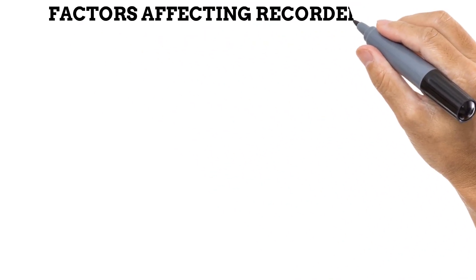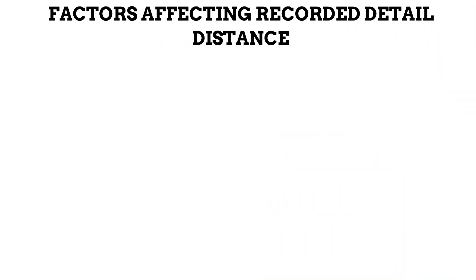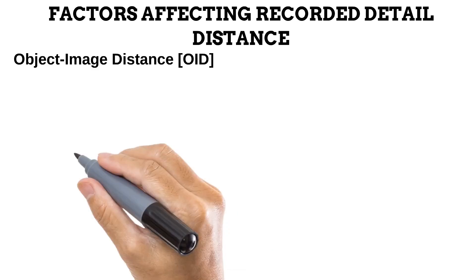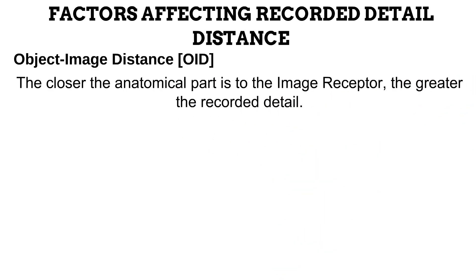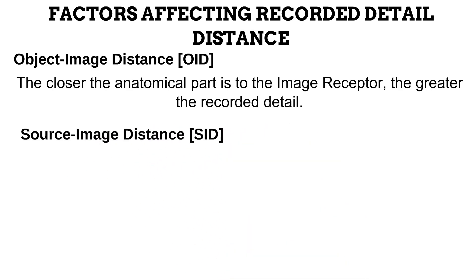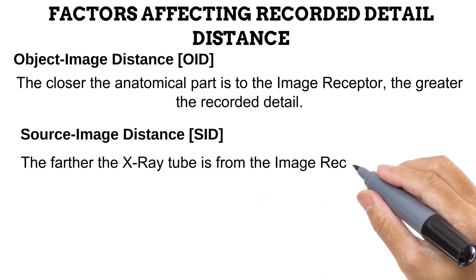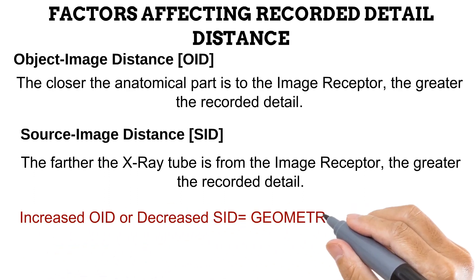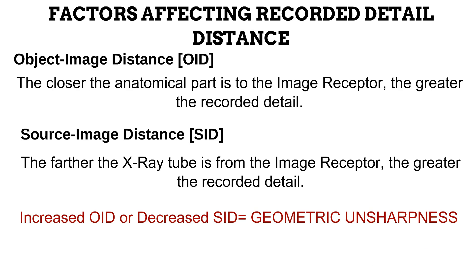The next factor affecting recorded detail is distance. The two types of distance that affect recorded detail are the object image distance (OID) and the source image distance (SID). The OID is the distance between the anatomical part and the image receptor — the closer the anatomical part is to the image receptor, the greater the recorded detail. The SID is the distance between the X-ray tube and the image receptor — the farther the X-ray tube is from the image receptor, the greater the recorded detail. A too-large OID and a too-small SID would produce geometric unsharpness.